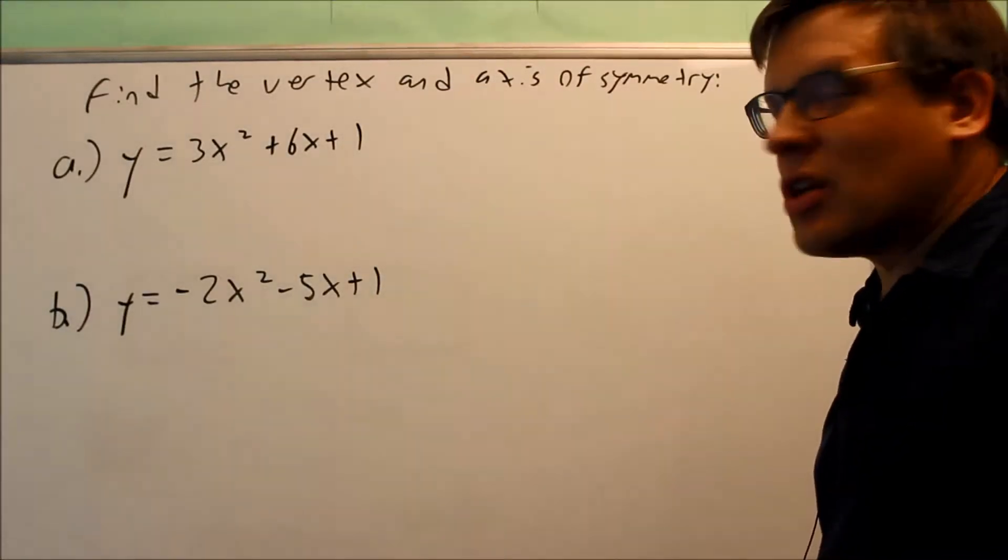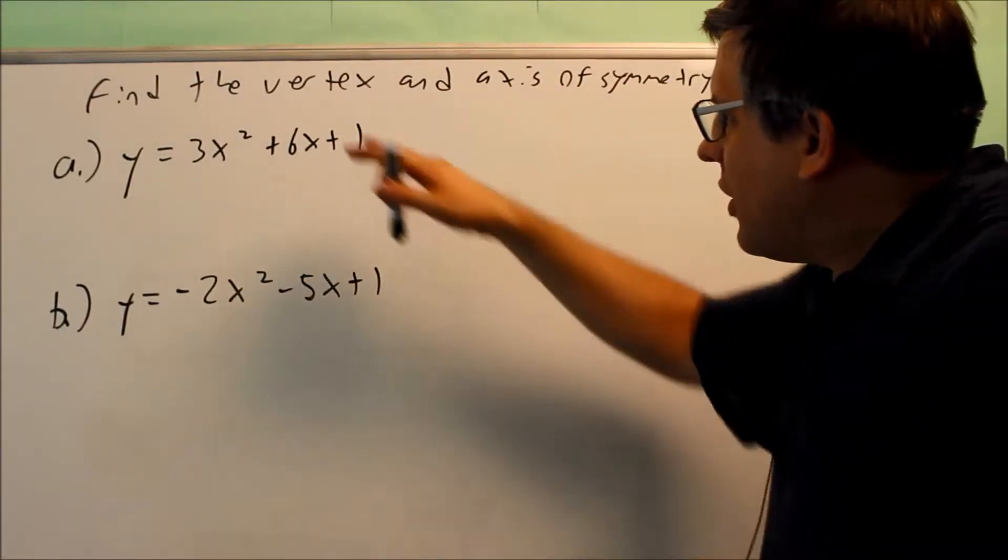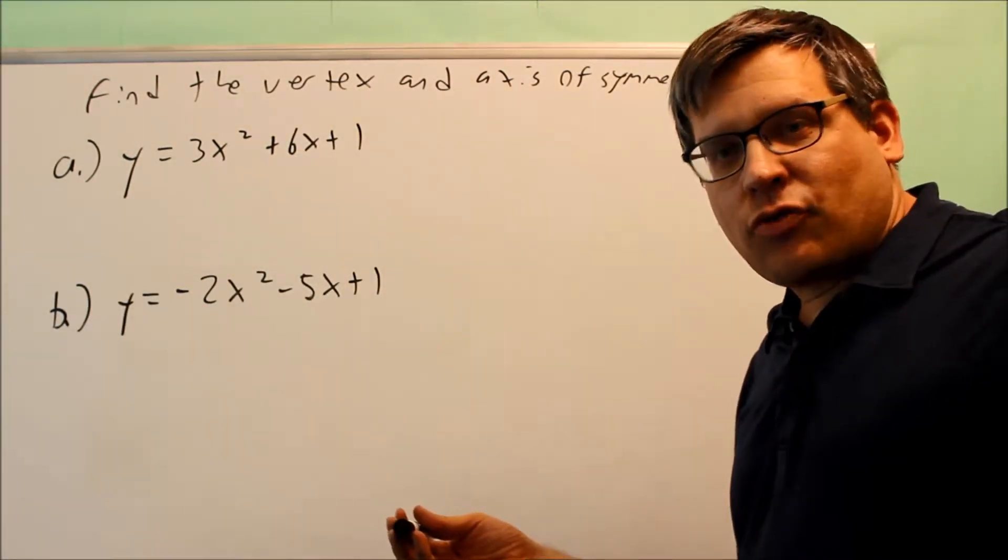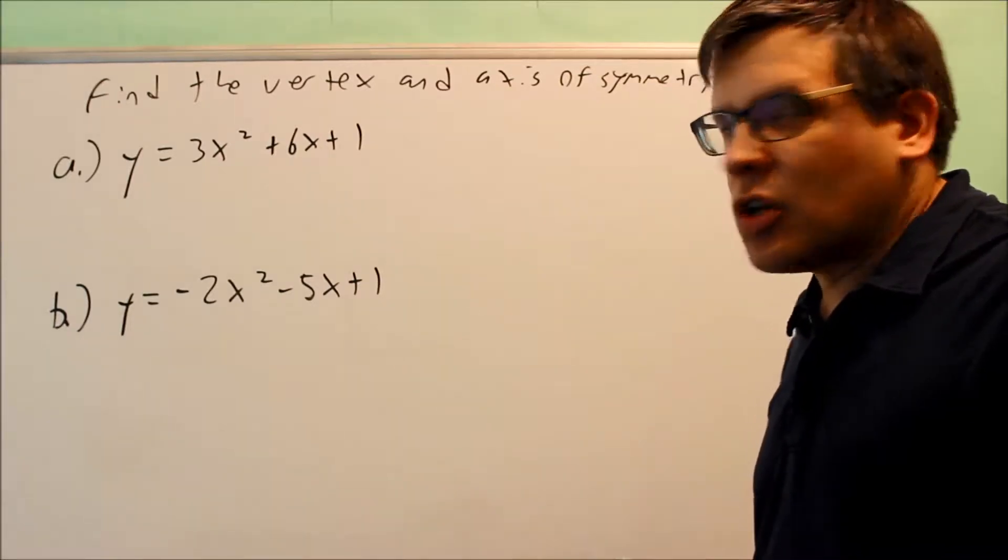We're going to find the vertex and the axis of symmetry. Now these are not given to us in proper vertex form, so because they're not, we have another way that we can solve these.